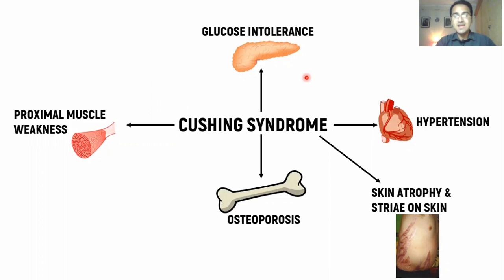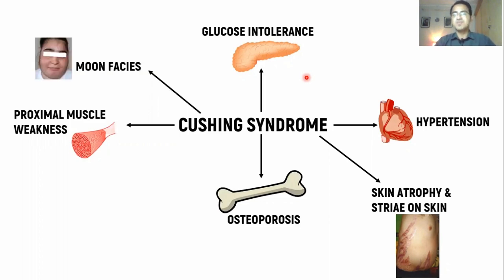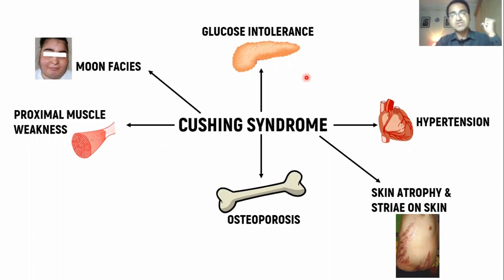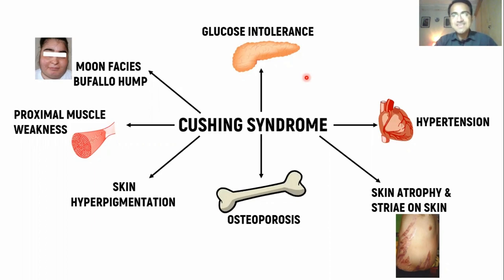Excess cortisol also causes proximal muscle weakness and moon face — deposition of fat in the central part of the body, in the face and trunk. Whenever there is excess fat deposition in the shoulders and between the shoulder blades it causes Buffalo hump.